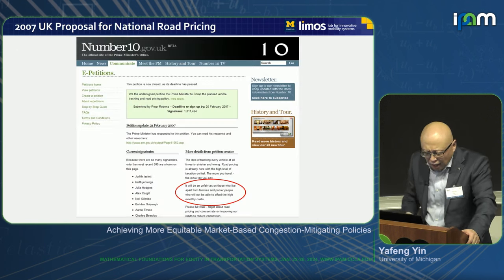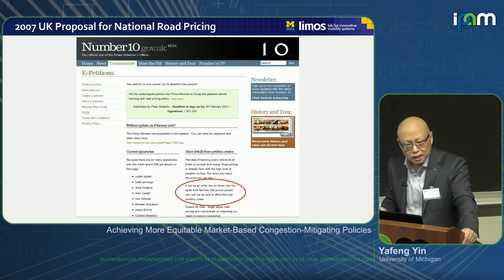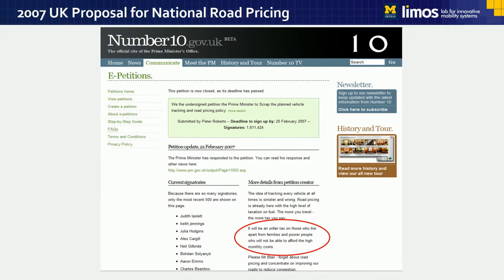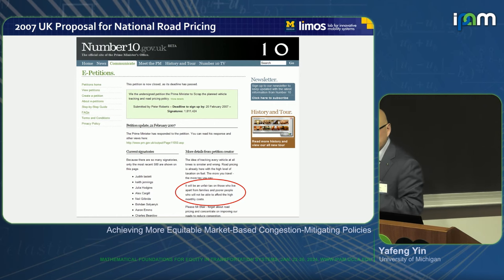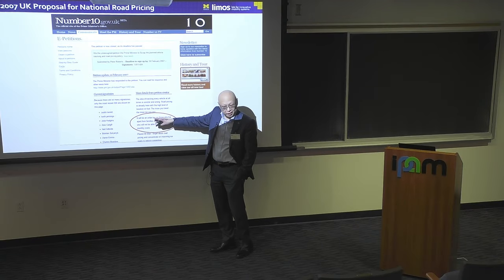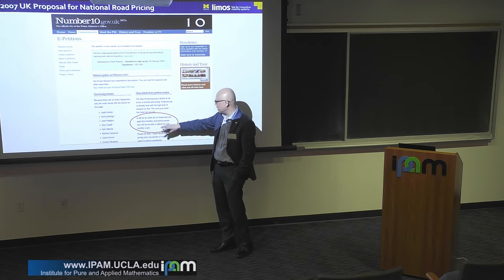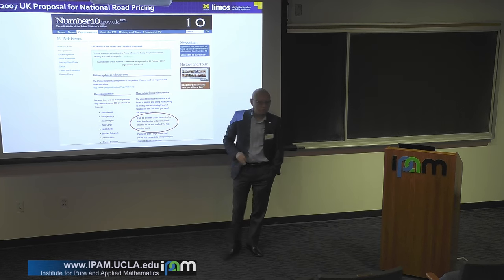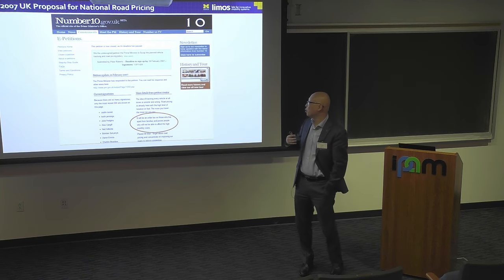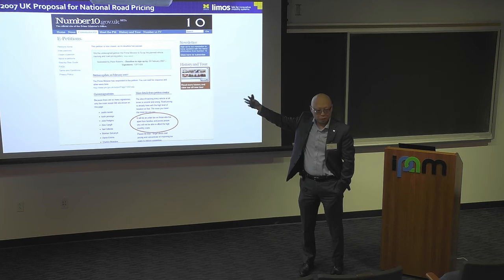One example: right after the successful implementation of congestion pricing in London, the UK in 2007 had a proposal for national road pricing. When that proposal was announced, someone filed a petition on the official website of the Prime Minister. In a very short period of time, it got 1.8 million signatures. The petition said it would be an unfair tax on those who live apart from families and poor people who will not be able to afford high monthly costs — once again, a perceived inequality argument. With roughly 5% of the population signing, Tony Blair had to respond and eventually canceled the proposal.